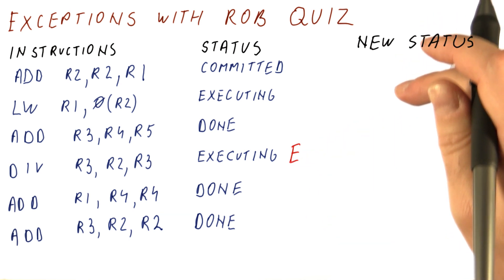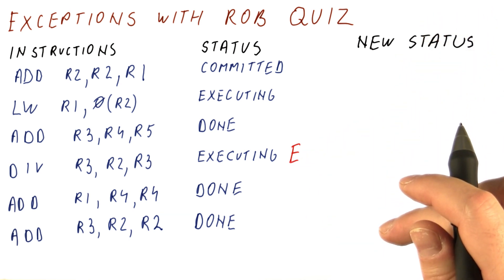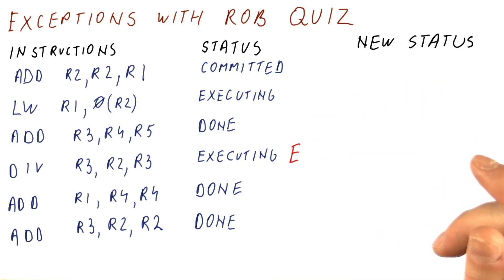The question for you is what is the new status of these instructions after this exception has been handled, meaning what is the new status at the point at which we can go to the exception handler.